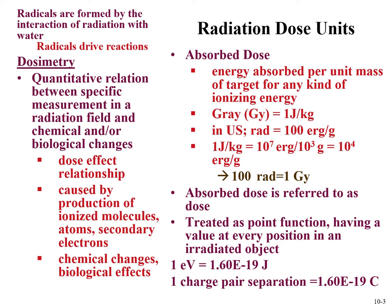When we talk about absorbed dose, we talk about the energy absorbed per unit mass of any target for any kind of ionizing radiation. We use units such as gray or rad. We're talking about the energy absorbed, not really focusing on the ionizing particle depositing that energy. The absorbed dose is often referred to as dose and is treated as a point function, having a value at every position in an irradiated object.